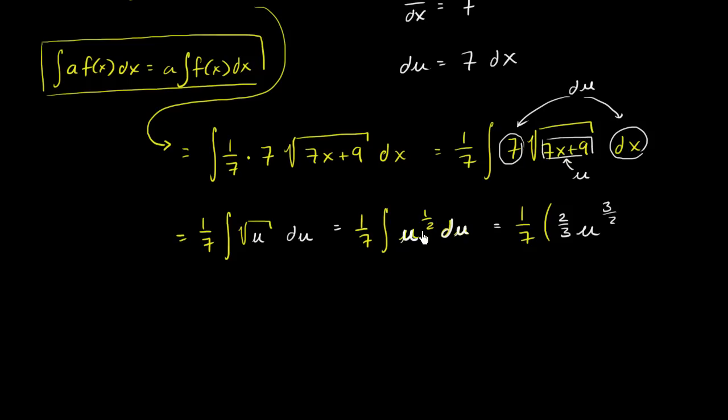And so we have that. And since we're multiplying 1 seventh times this entire indefinite integral, we could also throw in a plus c right over here. There might have been a constant. And if we want, we can distribute the 1 seventh. So it would get 1 seventh times 2 thirds is 2 over 21. 2 over 21 u to the 3 halves. And 1 seventh times some constant, well, that's just going to be some constant. And we're done.